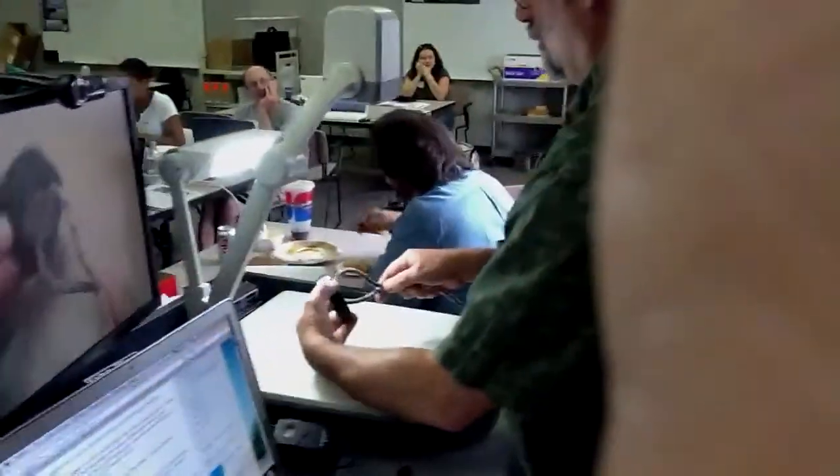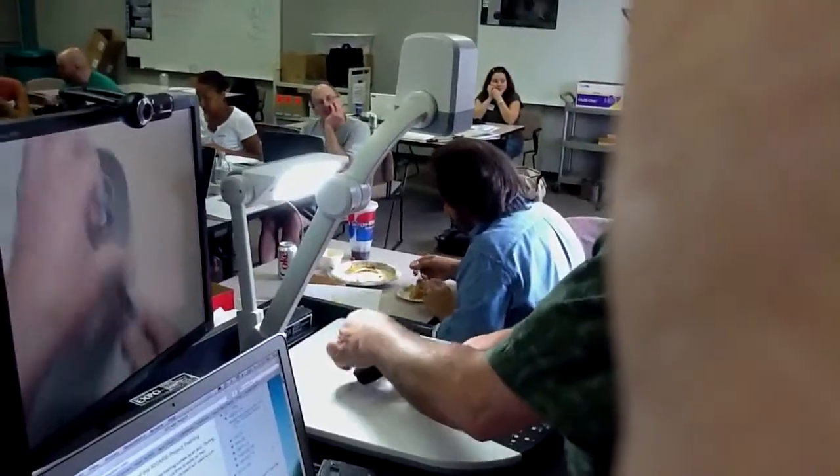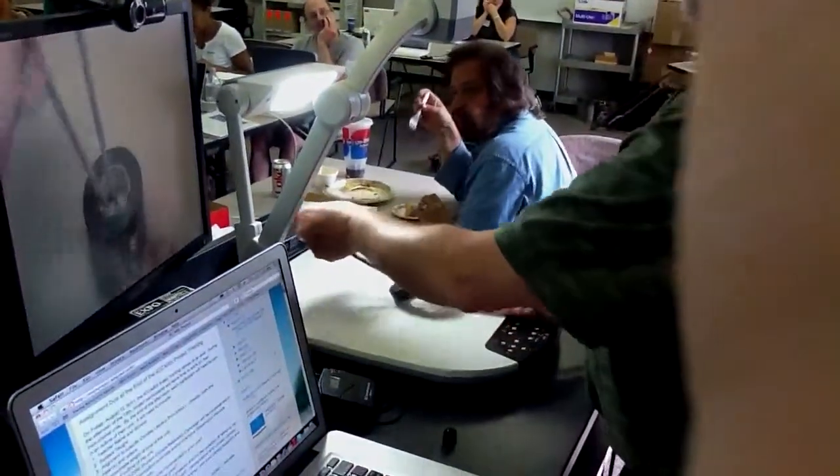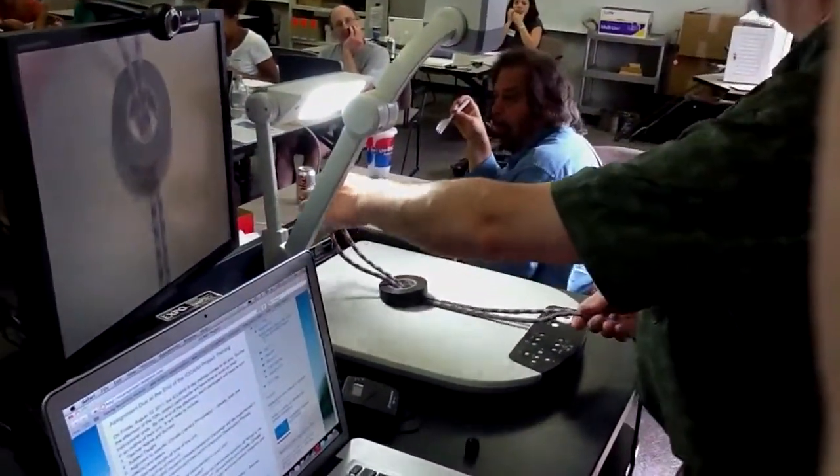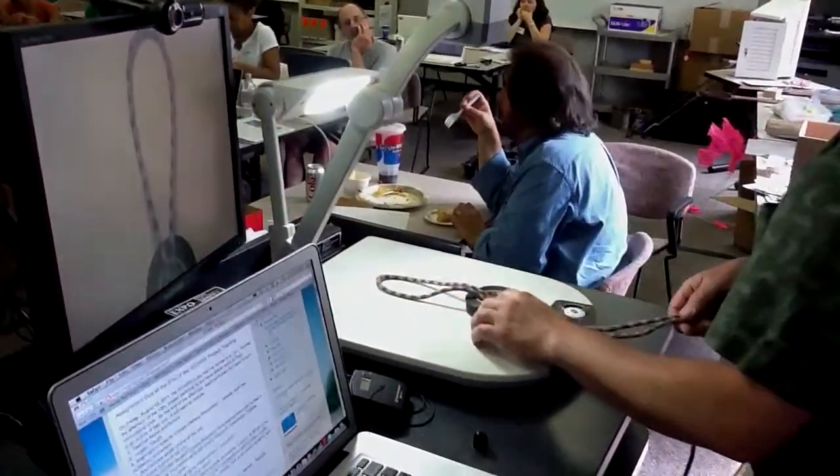I'm going to take this lanyard and pull it through the back of that little silver ring. That's my little silver ring. You've got to loop through the silver ring.